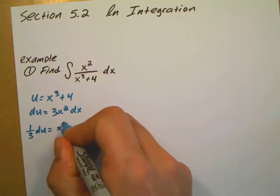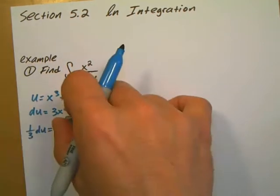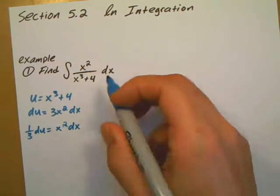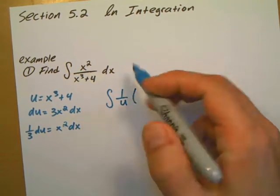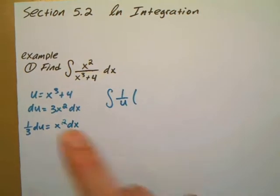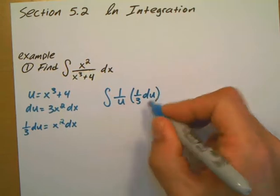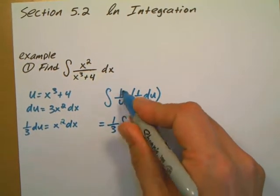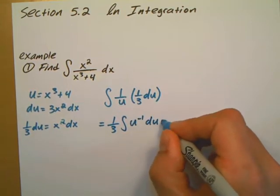du is equal to x to the second dx. So rewriting my integral, I'm going to write this as 1 over u. x squared dx, which are these two, get replaced with 1 third du. 1 third is just a constant, I can factor that out, so it's going to be 1 third. 1 over u is the same thing as u raised to the negative 1 power, du.